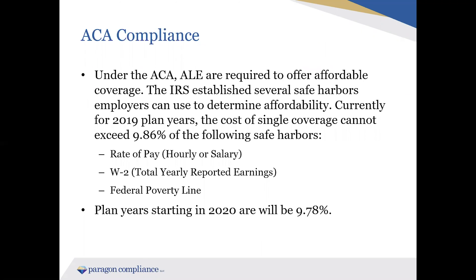The second penalty we're trying to avoid is the affordability penalty. For 2019 plan years, the IRS has set a rate of pay safe harbor of 9.86%. Essentially, your lowest single cost of coverage cannot exceed this amount based on the following safe harbors: an employee's rate of pay — whether they're hourly or salary — W-2 wages, and the federal poverty line. We recommend you use the rate of pay safe harbor as it's the most consistent way to measure affordability on a per-year basis.